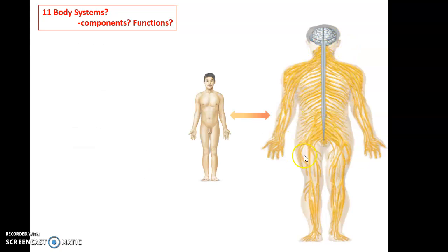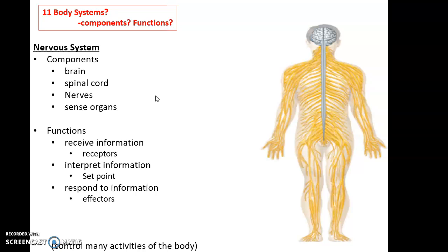Then we have this lovely system, known as the nervous system. The nervous system includes the brain, the spinal cord, the nerves coming off the brain and spinal cord, and the sense organs, such as the eyes, the tongue, the ears, and so on.